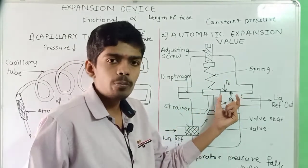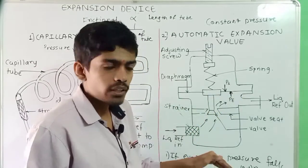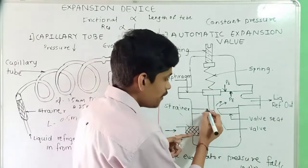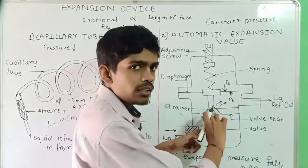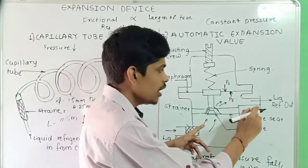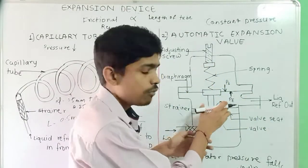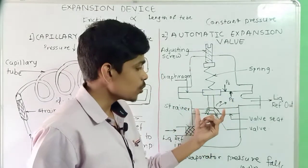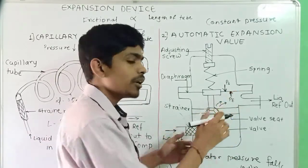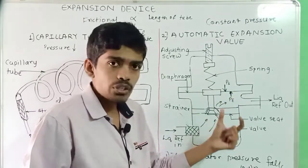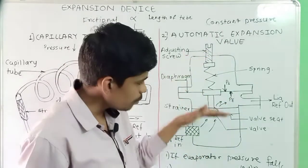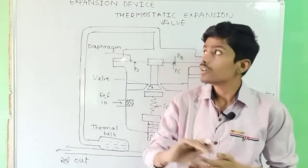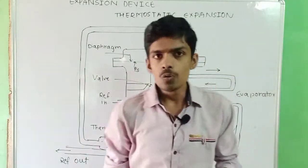The valve will remain closed until the compressor starts again and the evaporator pressure falls down. Once the evaporator pressure falls down, the spring will fully expand and the cycle will get repeated. So this was the Automatic Expansion Valve.